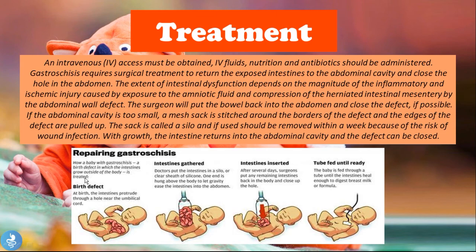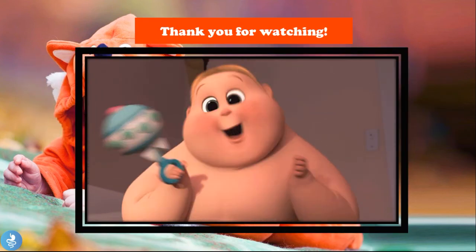Looking at the image showing the staged gastroschisis repair process: at birth, the intestines protrude through the hole near the umbilical cord. In the first step, the intestines are gathered and placed in a silo — a clear silicone sheath — with one end hung above the body so gravity eases the intestines back into the abdomen. After several days, surgeons return any remaining intestines into the body and close the hole. IV nutrition must continue because those bowel loops need time to rest and regain their function due to inflammation and irritation. The baby is fed through a tube until the intestines heal enough to digest breast milk or formula.